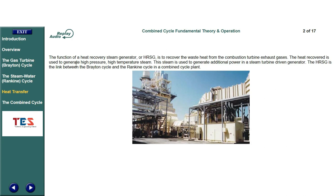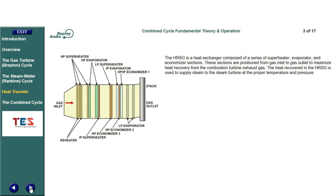The heat recovered is used to generate high pressure, high temperature steam, which is used to generate additional power in a steam turbine-driven generator. The HRSG is the link between the Brayton cycle and the Rankine cycle. The HRSG is a heat exchanger composed of a series of superheater, evaporator, and economizer sections, positioned from gas inlet to gas outlet to maximize heat recovery from the combustion turbine exhaust gas. The heat recovered in the HRSG is used to supply steam to the steam turbine at the proper temperature and pressure.